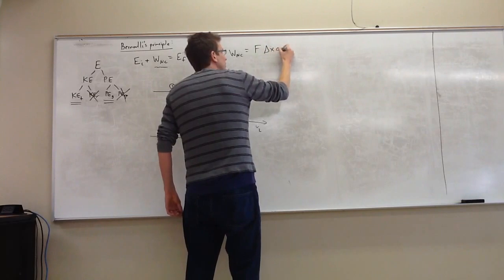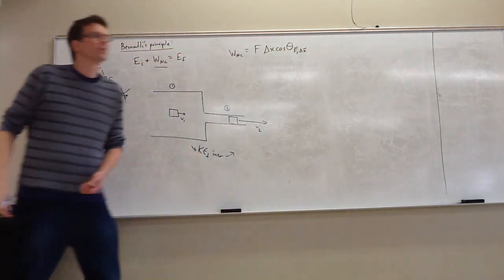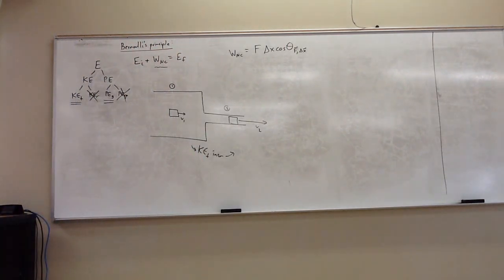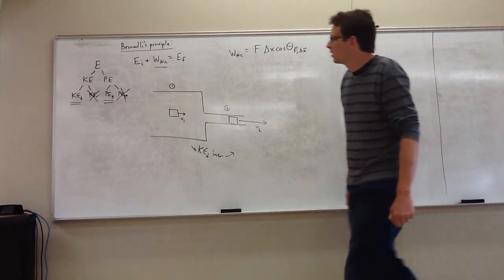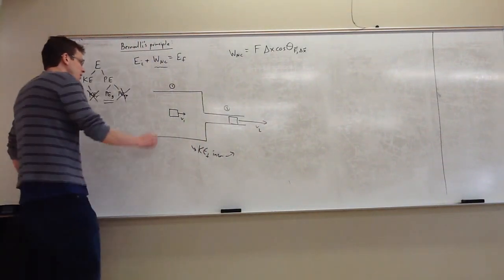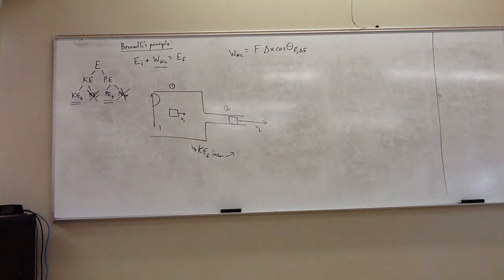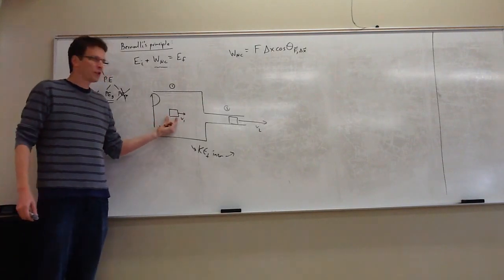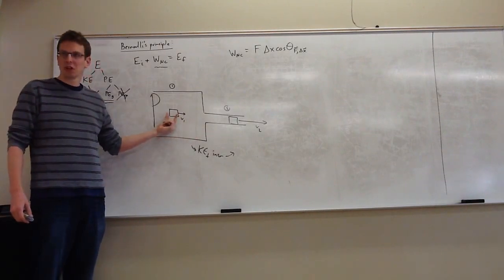We have to compute non-conservative work the old-fashioned way: force times delta-x times cosine of theta. This goes all the way back to the first day of the work-energy unit. There's a pressure P1 in this section of tube. When this chunk of water is entirely in section 1, it's got P1 on one side and P1 on the other side too — that's why its speed won't change.